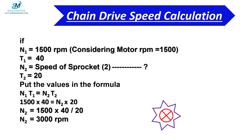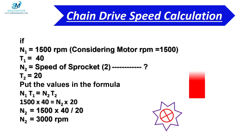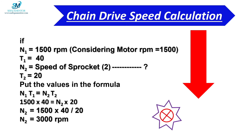After calculation, N2 = (1500 × 40) / 20, so N2 = 3000 rpm. The speed of sprocket 2 is 3000 rpm. From these two calculations we can conclude: when the sprocket size of the drive increases, the RPM of the driven equipment increases accordingly; and if we decrease the sprocket size of the drive, the RPM of the driven equipment decreases accordingly.